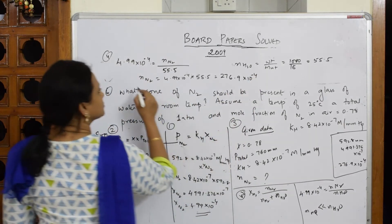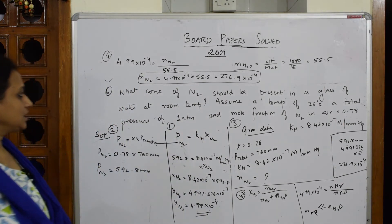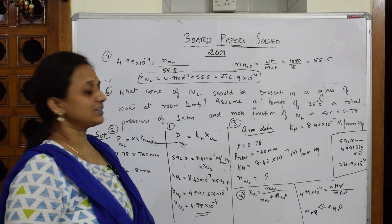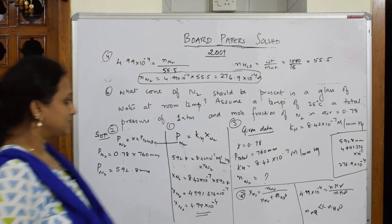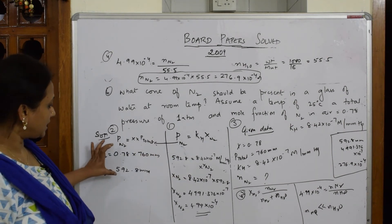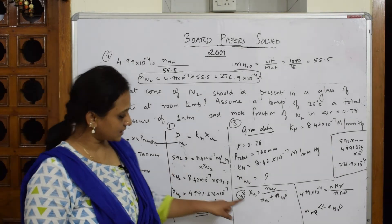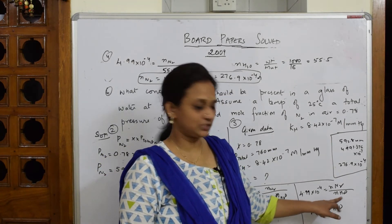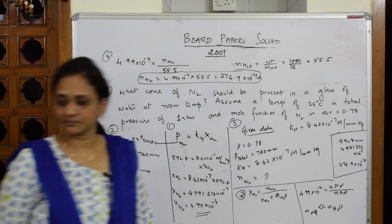So the concentration of N₂ should be 276.9 × 10⁻⁴ molar. To summarize: first I wrote Henry's law formula, then related it to PN₂ = X × P_total. After substituting the data, I came to the mole fraction. In the mole fraction, we neglected the solute in the denominator because it is a dilute solution, and from that I found the number of moles.